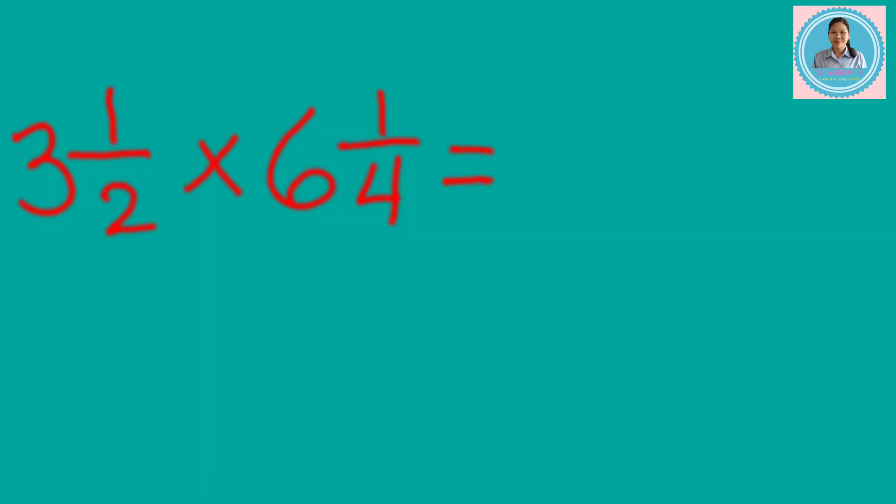First, what we are going to do is to change the mixed numbers to improper fractions by multiplying the denominator and the whole number and adding the numerator to get the new numerator.